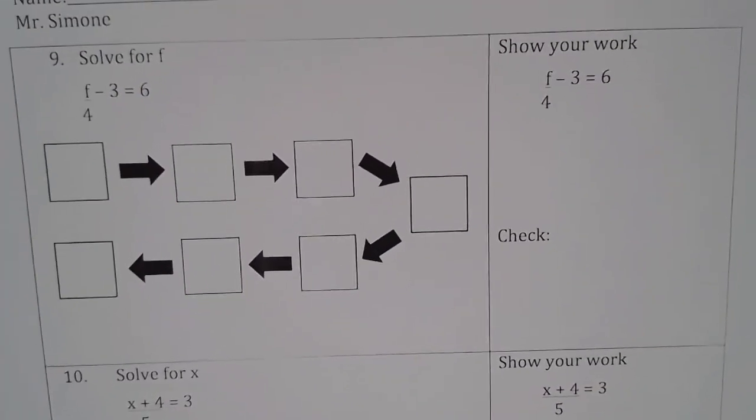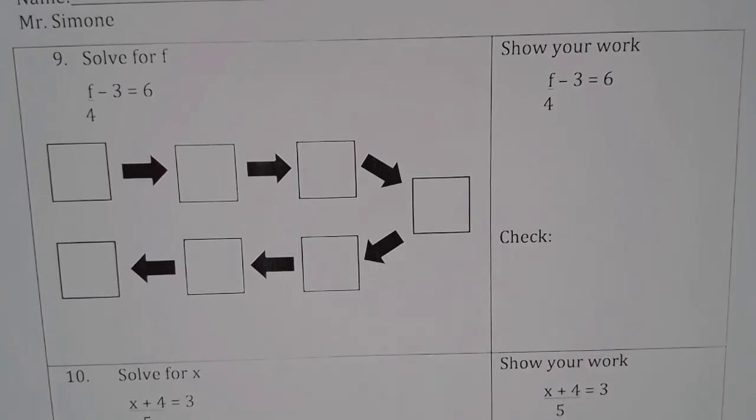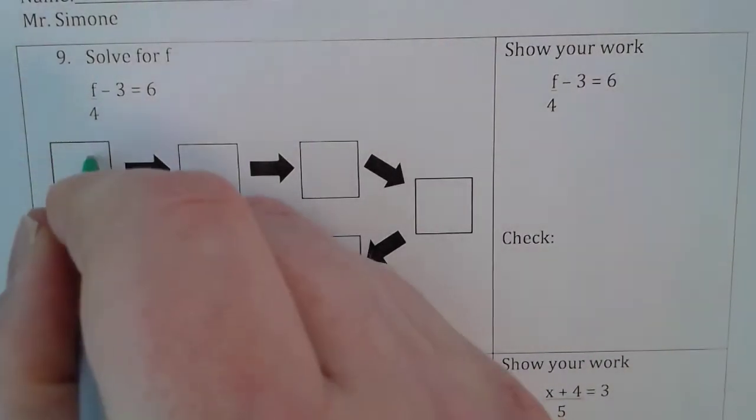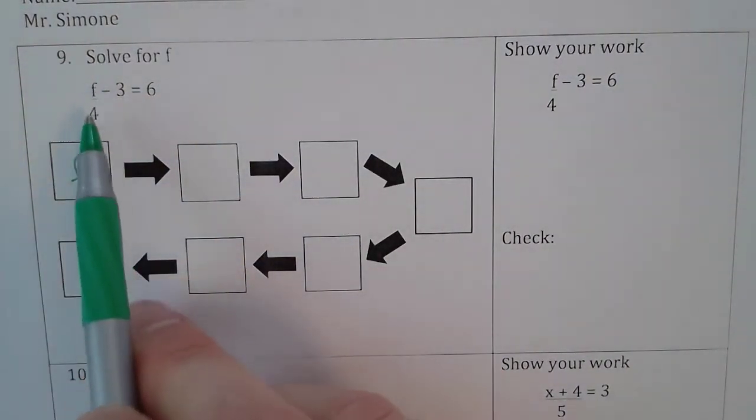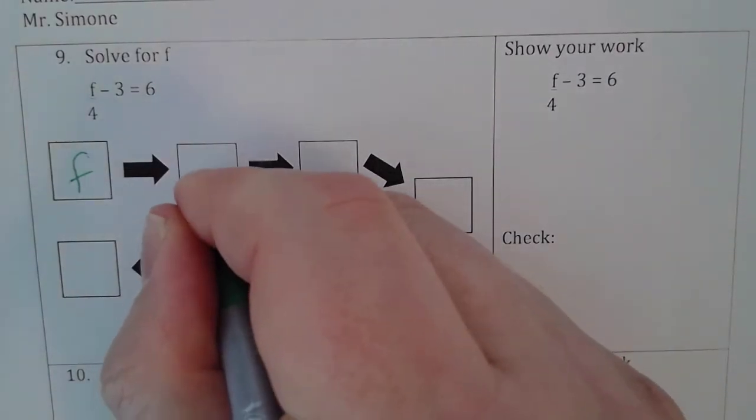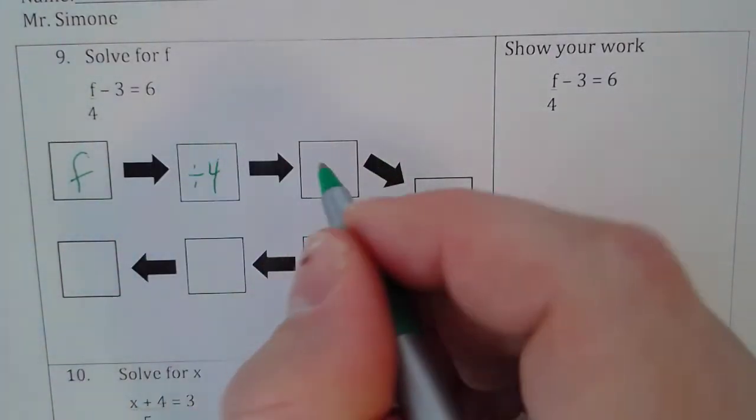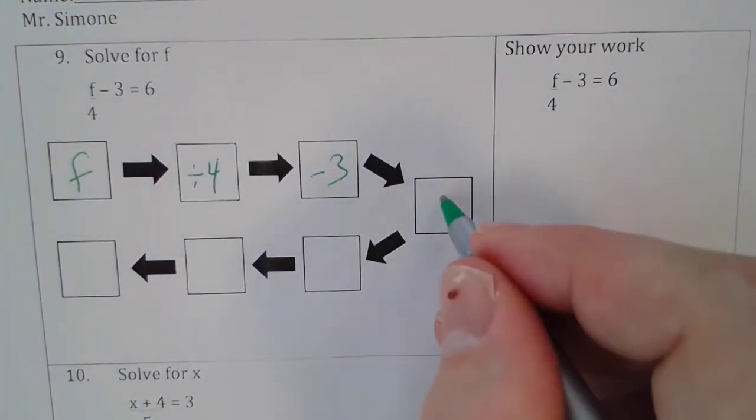Next problem. Similar to the one we just did, we have a variable that we're solving for, which is f. In this problem, f is being divided by 4, and subtracted by 3, and the solution is 6.